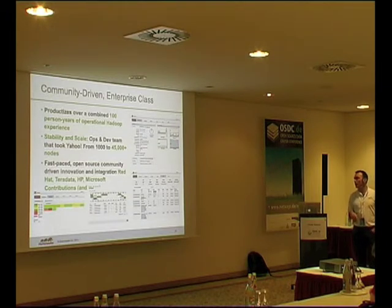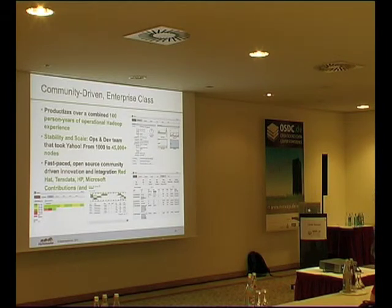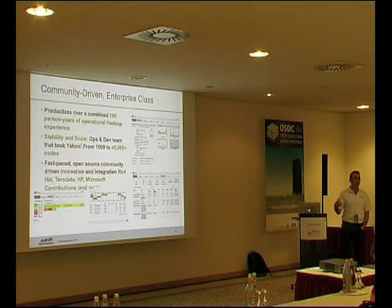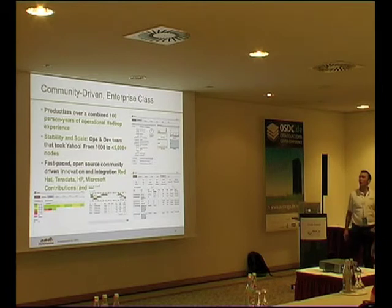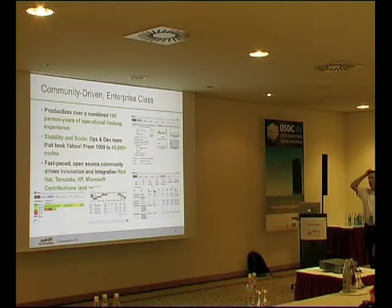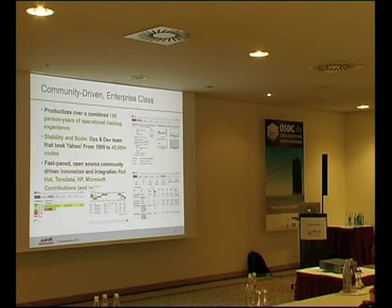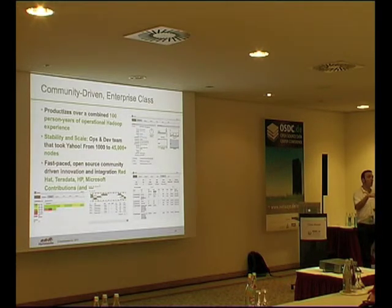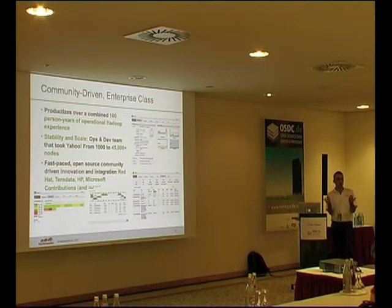By default, Ambari comes with performance monitoring embedded — it uses Ganglia and Nagios, installed automatically. If you want to use another performance monitoring solution, you can pull information out through the REST API. For example, Teradata and Microsoft have their own system management solutions and they integrate through the Ambari interface — they don't present Ambari to the end user but get all information out of it.